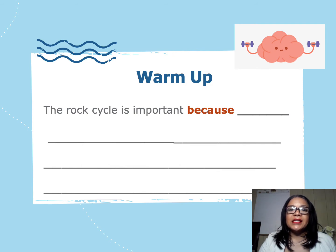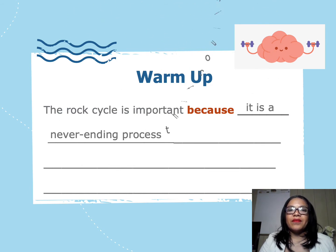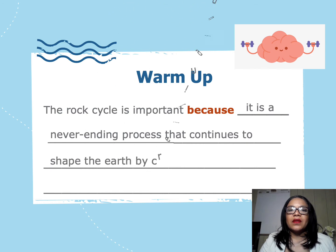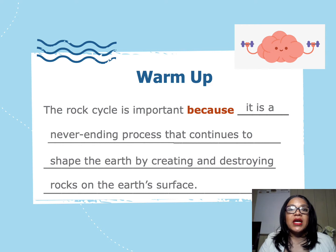This sentence begins by saying 'the rock cycle is important because,' so we need to finish it by explaining why the rock cycle is important. Watch how I use what I learned from our text this week to expand this sentence. My expanded sentence says: the rock cycle is important because it is a never-ending process that continues to shape the earth by creating and destroying rocks on the earth's surface. Did you notice how I used the transition word because to explain why the rock cycle is important?